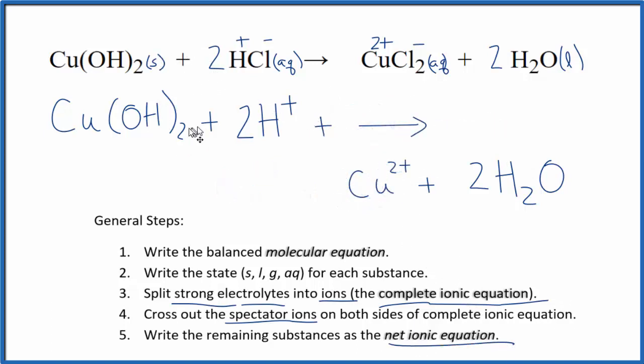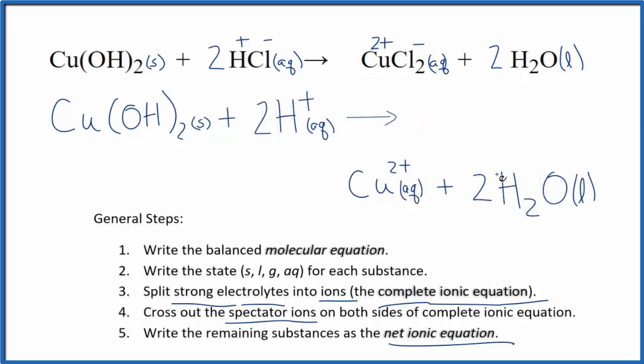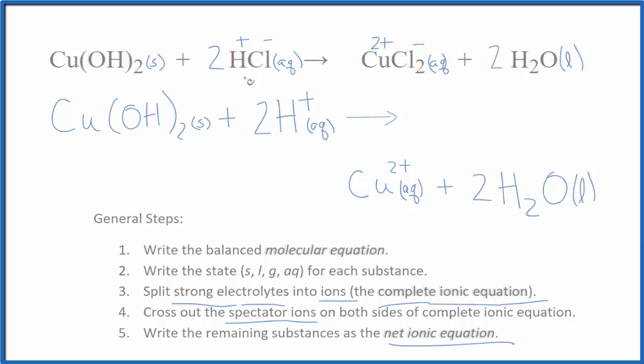We should also write the states in after each one of these now. And this is the net ionic equation for Cu(OH)₂ plus HCl, copper(II) hydroxide plus hydrochloric acid. And this is Dr. B. Thanks for watching.